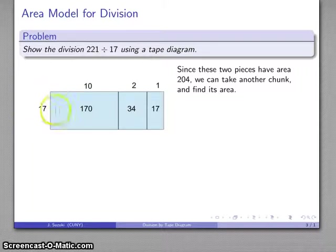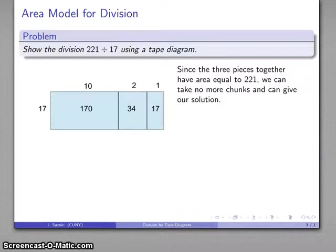So now this rectangle, 17 by 10 plus 2 plus 1, has area 17 by 10, 170 plus 34 plus 17, so that's going to be 221. This is my entire rectangle, and my quotient is length of that top side: 10 plus 2 plus 1 is going to be 13.